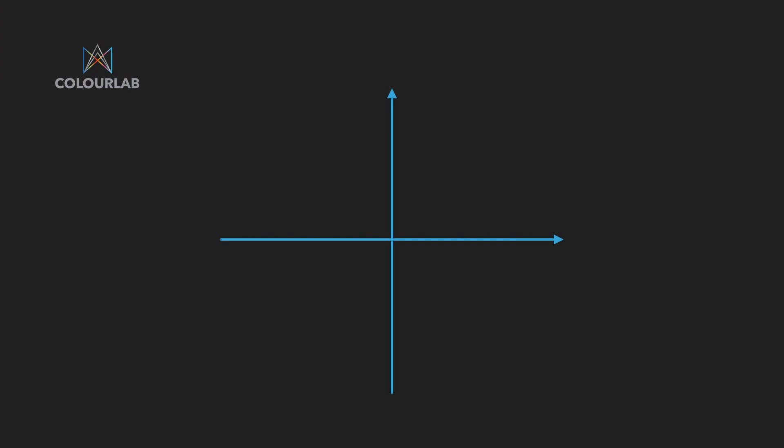In this particular chart, we have two axes, and these two axes represent the two most important factors when it comes to the emotion of an image. The first axis is called contrast. It's because we are not able to decide how bright an image is, but what we are able to do is compare the difference between the dark and bright part of an image, which is exactly the definition of contrast.